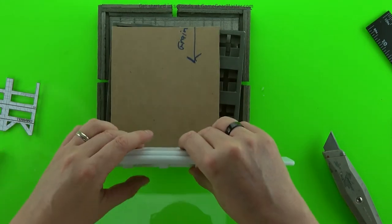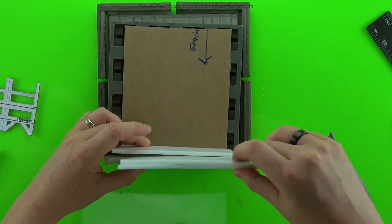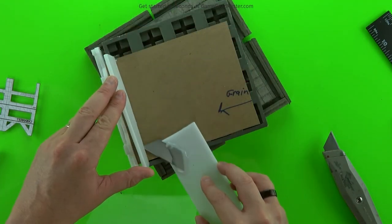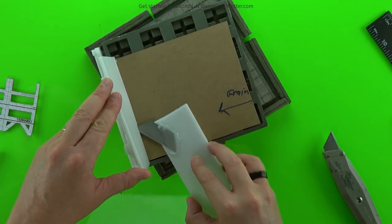And once that's dry, we'll lay it on top of something to make sure that the cardboard is laying flat. And then we'll use our depth cutter to cut that strip to its correct height.